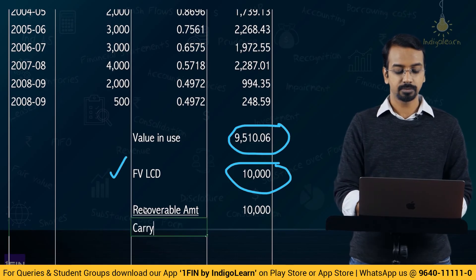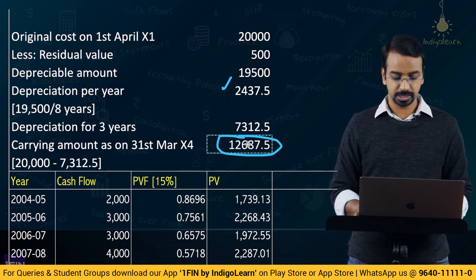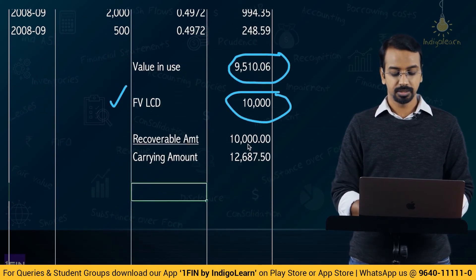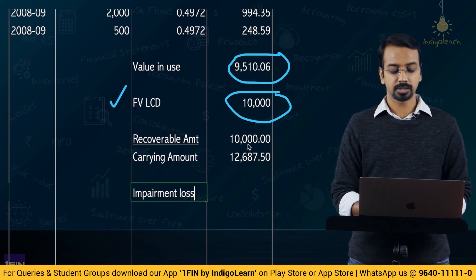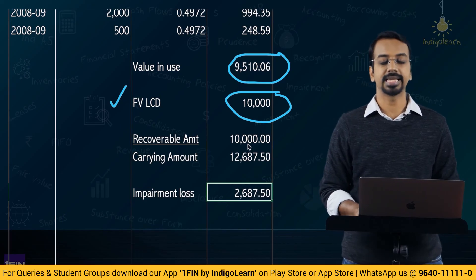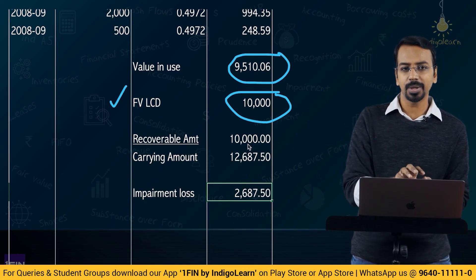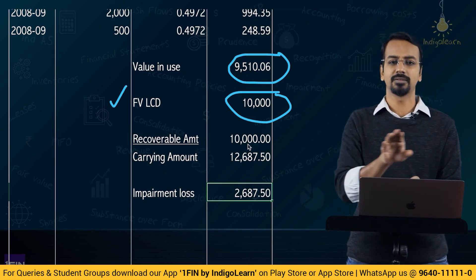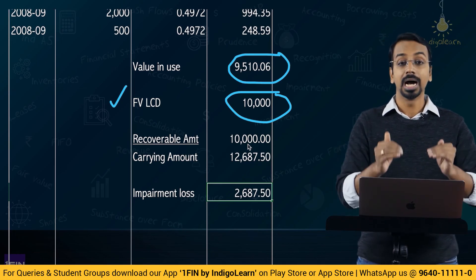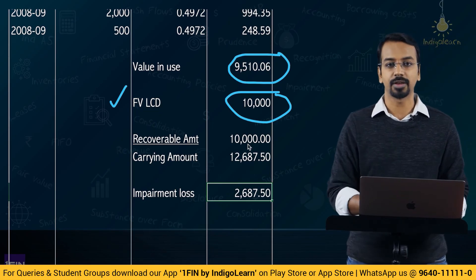The carrying amount is 12,687.5. Impairment loss = 12,687.5 minus 10,000 = 2,687.5. This is the impairment loss. It is generally debited to P&L unless there is a revaluation surplus.